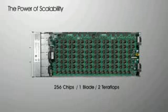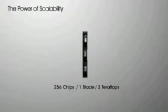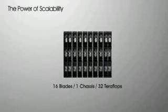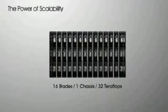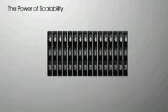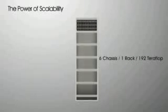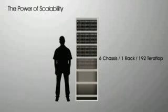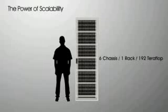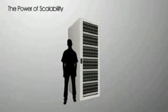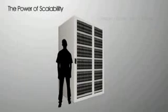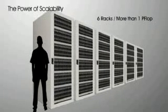We can fit 256 chips onto a bigger board called a blade. One blade equals over two teraflops of processing power. We can in turn fit 16 blades into a chassis. A standard computer rack measuring about 8 feet tall by 1.5 feet wide would be able to house six chassis. And with just six of these racks, we would have an astounding over a petaflop of processing power — putting us on par with a state-of-the-art supercomputer.